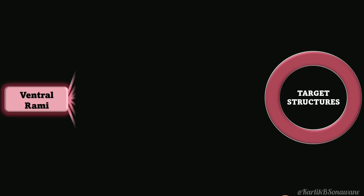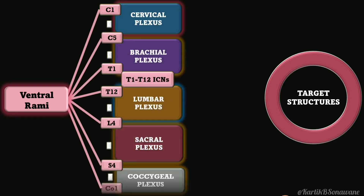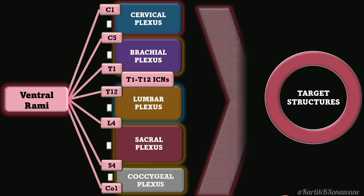The ventral rami, instead of directly innervating target structures, contribute to form five different major plexuses: cervical plexus, brachial plexus, lumbar plexus, sacral plexus, and coccygeal plexus. These plexuses are interconnected with some overlap.